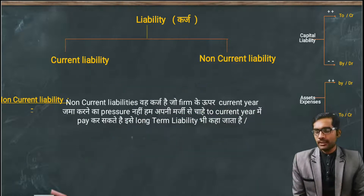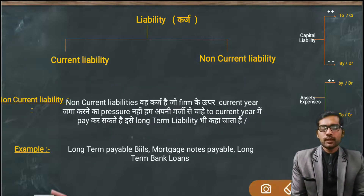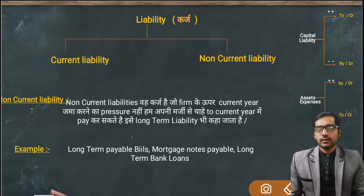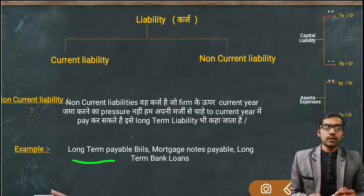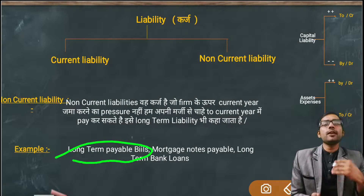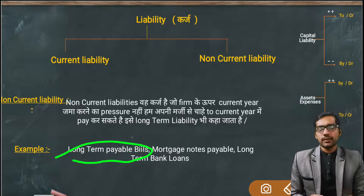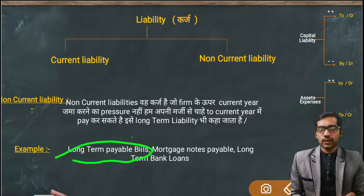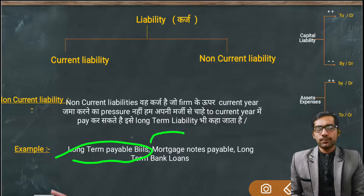Let's look at examples of Non-Current Liability. First is Long Term Loan. Next is Long Term Payable Bills — bills that you hold for which payment is due only after a long time in the future. All long term loans and long term payable bills come under Non-Current Liability. Similarly, Mortgage Notes Payable — where you have pledged something as collateral to borrow money.